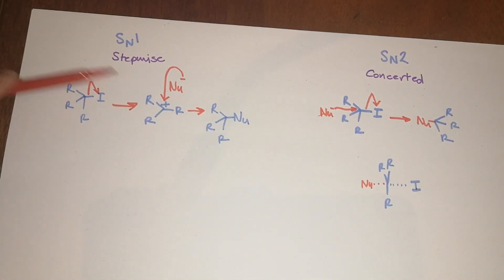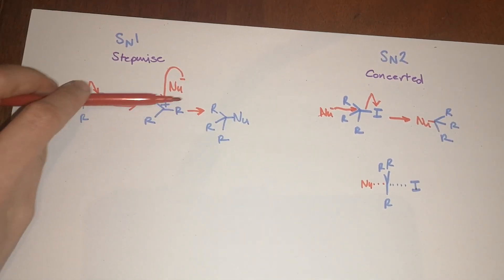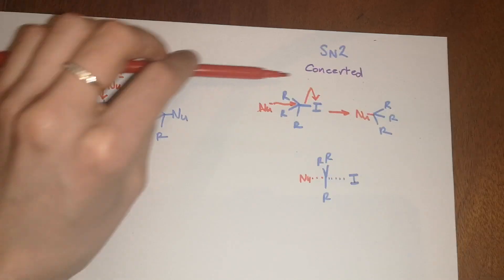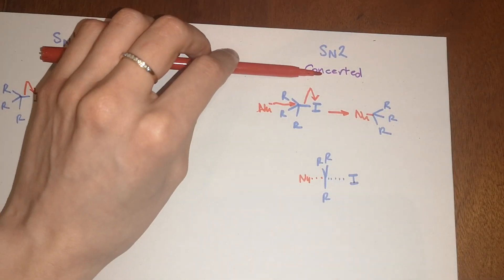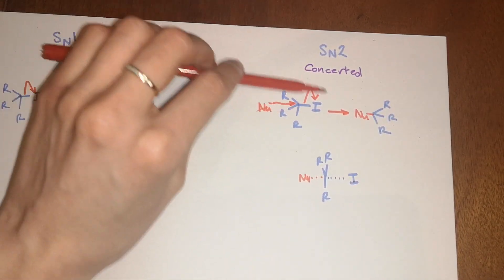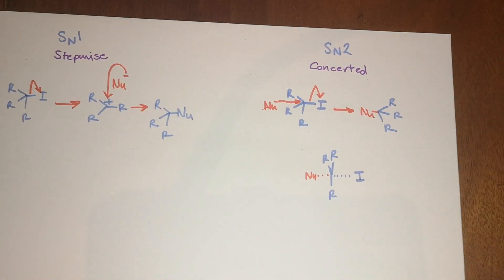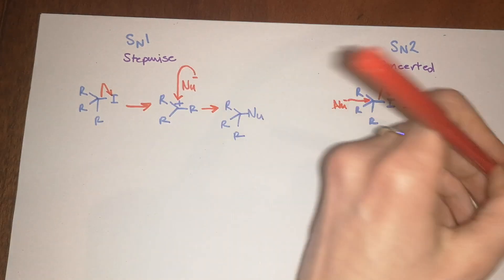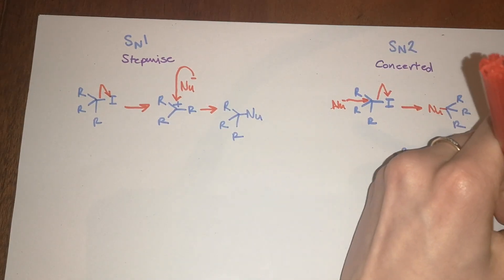Stepwise means your iodine leaves first, then the nucleophile arrives. In the case of the concerted SN2, the nucleophile comes in as the iodine is leaving. So that's the difference in mechanism.